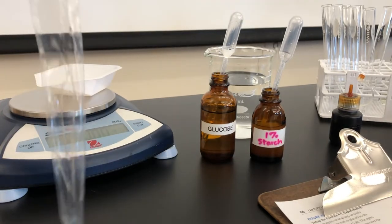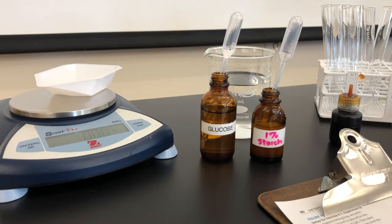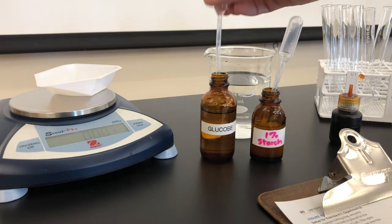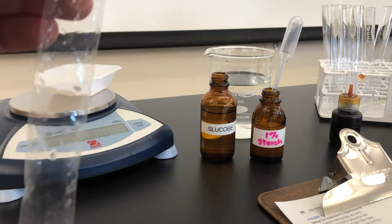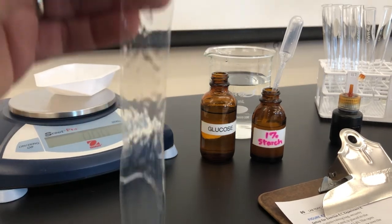Into this bag we're going to place both glucose and starch. The directions say four pipettes full. I'm going to use four milliliters.